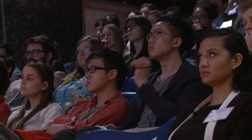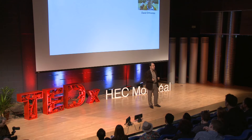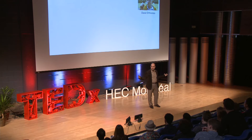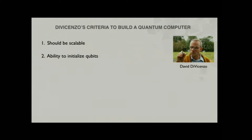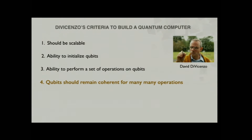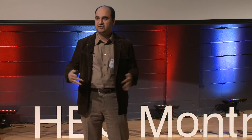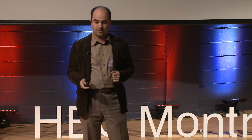If you can make one qubit, you should be able to make two, ten, a hundred, a thousand qubits and put them all in one machine. If it takes a room to control one qubit, that's not scalable. The second condition is that we should be able to initialize the qubit. The third is that we must be able to perform a set of operations on it. The fourth — probably the most difficult — is that the qubit should remain coherent for many operations before losing its information. And finally, you should be able to read the result from the qubit.